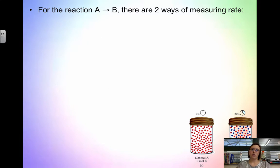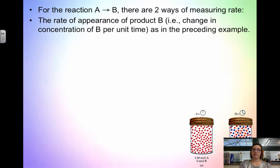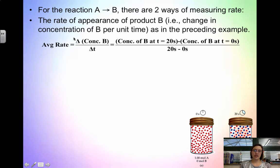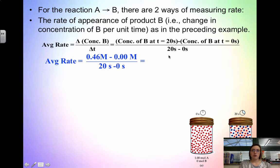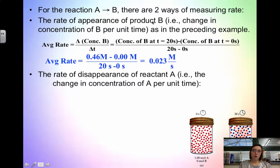For the reaction A going to B, there are two ways we can measure the rate. We can look at the rate of appearance of product B — how does the concentration of B change per time? Rate is change in concentration over the change in time, so we pick two points, say 20 seconds and 0 seconds. We take final minus initial over change in time. Our average rate is 0.023 molar per second, meaning every one second we make 0.023 molar of compound B.